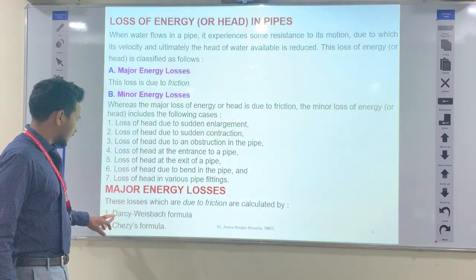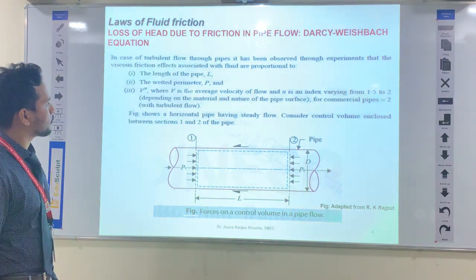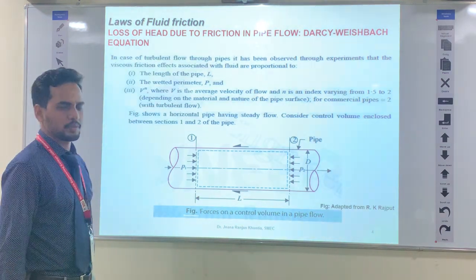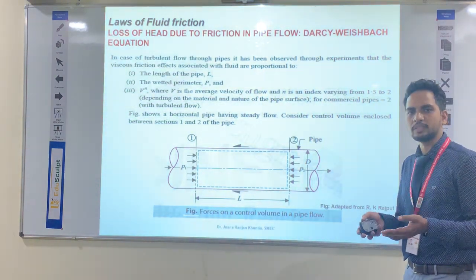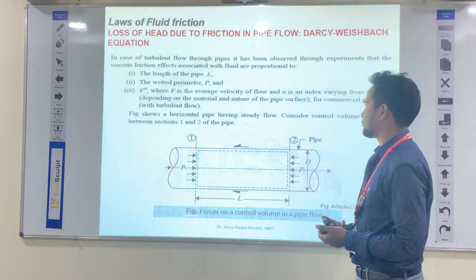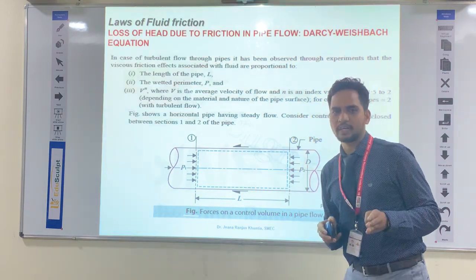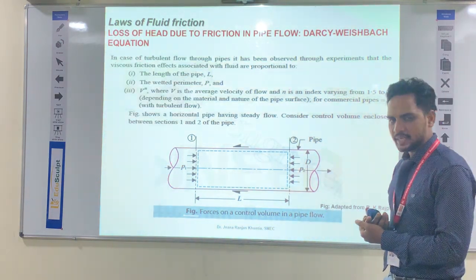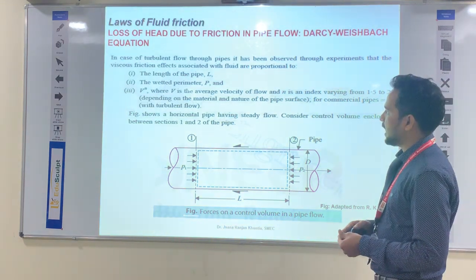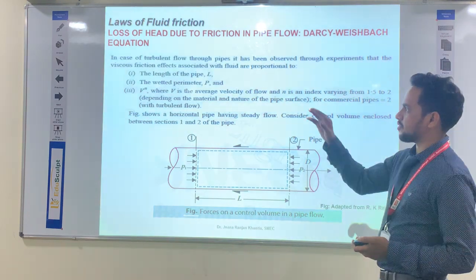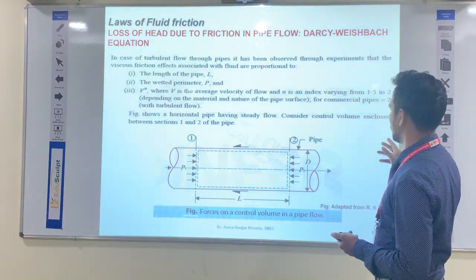First we discuss major energy losses using the Darcy-Weisbach equation. The loss of head due to friction in pipe flow — we are considering only turbulent flow, because in real field turbulent flow is more common than laminar flow. Through experiment it has been observed that the viscous friction effect is proportional to: the length of pipe L, the wetted perimeter P, and V to the power n, where V is the average velocity and n is an exponent varying from 1.75 to 2.